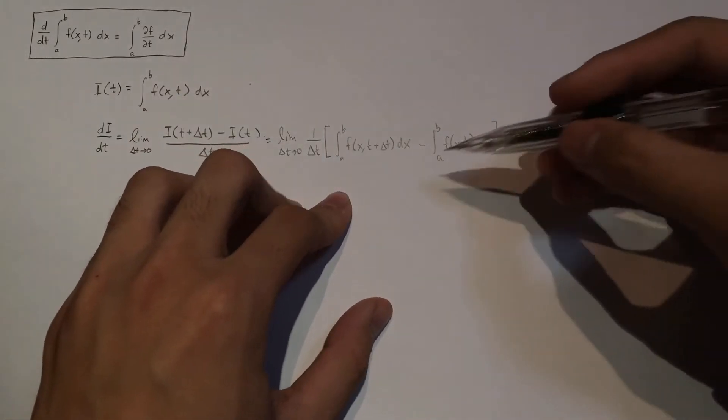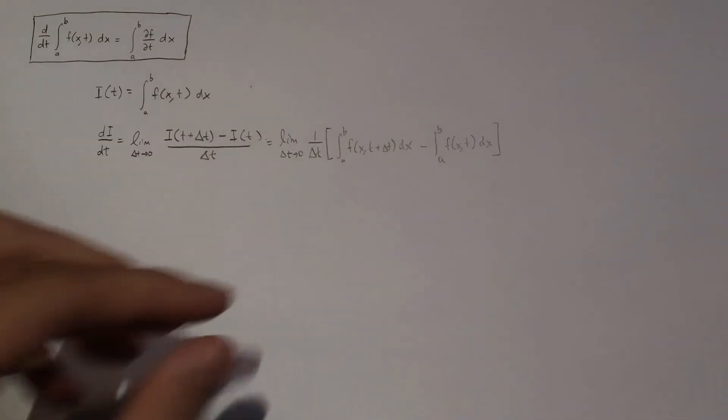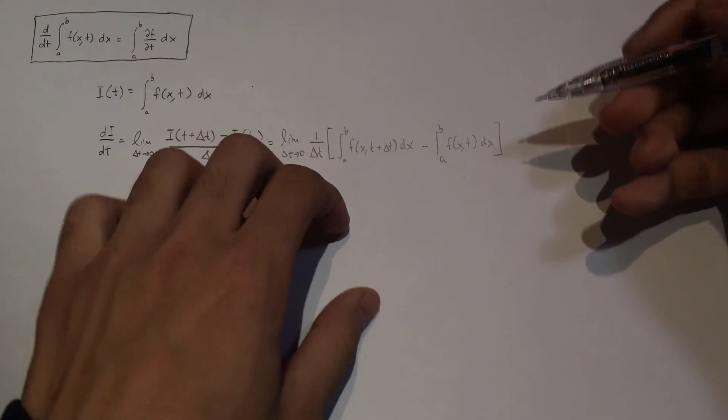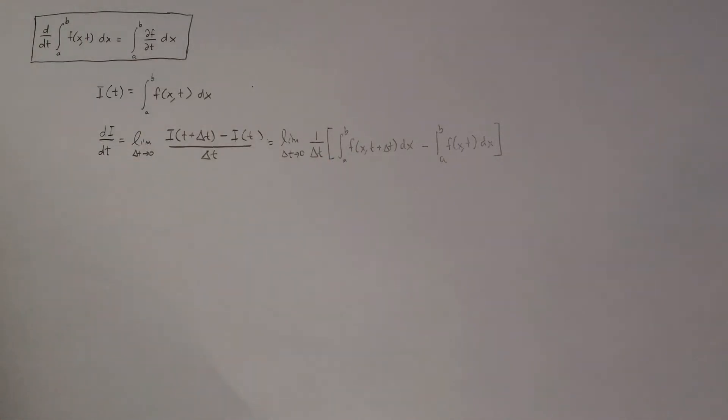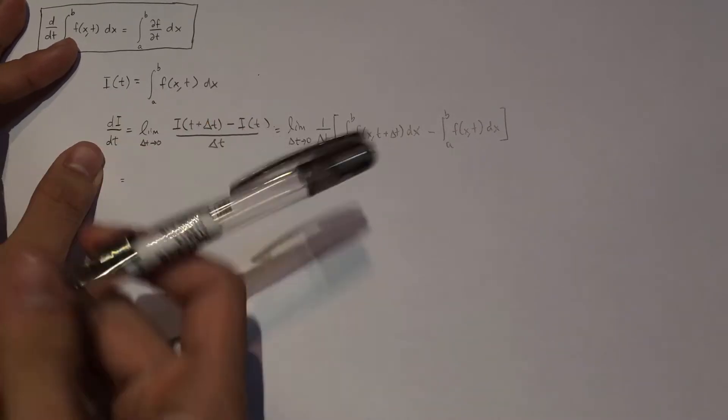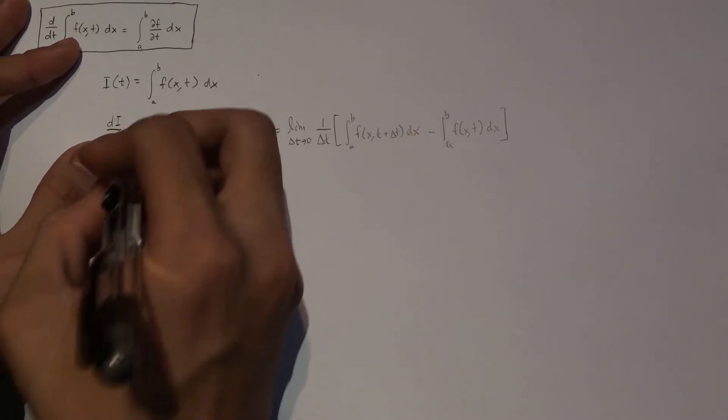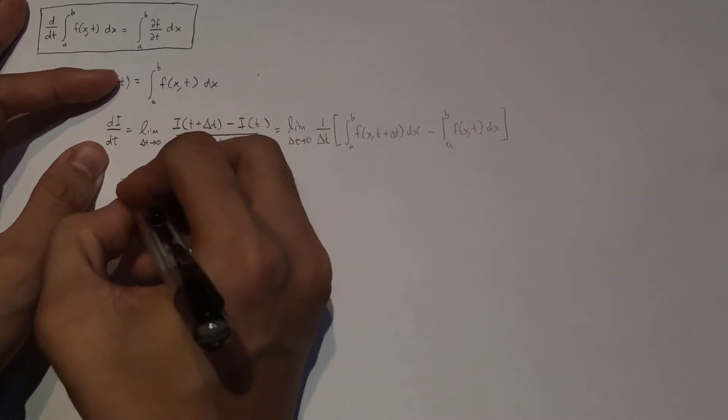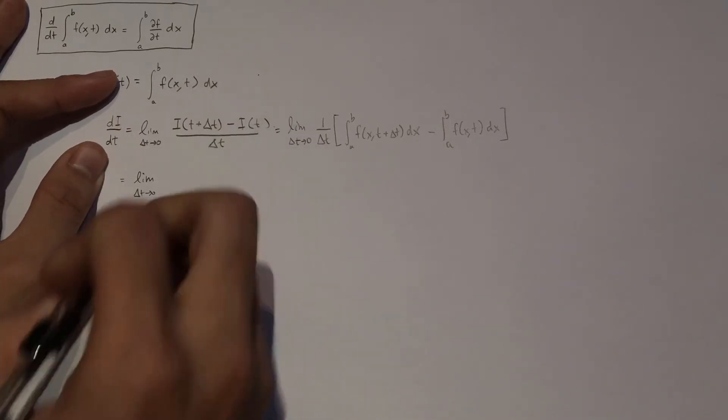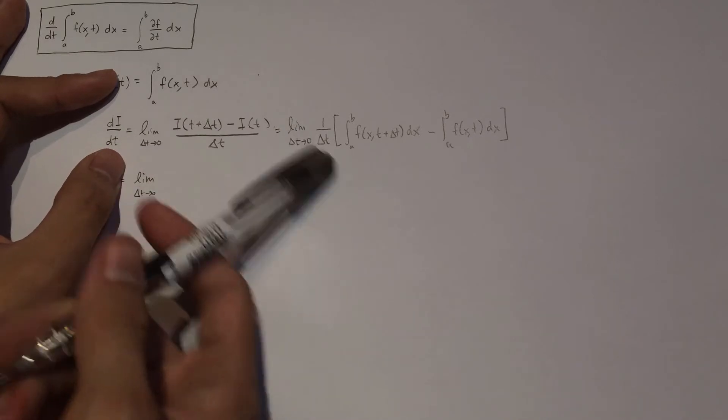So now, because here you have two integrals which are subtracting each other, and they're both integrating between the same limits, and they're both integrating with respect to the same variable. So now, what I could do is I could just combine these two integrals together like this.